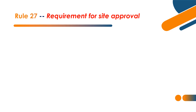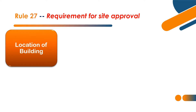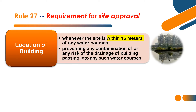Rule 27 is Requirement for Site Approval. There are two requirements: Location of Building and Reconstitution Documents. For Location of Building, whenever the site is within 15 meters from any watercourse, we need to prevent contamination or any risk of drainage of the building passing into any such watercourses. The drainage provisions apply for that location. It is recommended that the location of the building be 15 meters away from the watercourse.